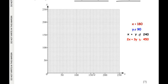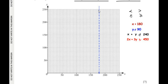On the x-axis, counting up: 160, 170, 180 is located here. We draw a dotted vertical line at x = 180, parallel to the y-axis. It is dotted because the inequality is strict (less than, not less than or equal to). We label this line x = 180.